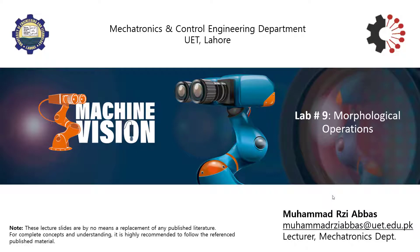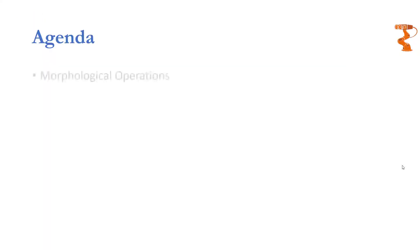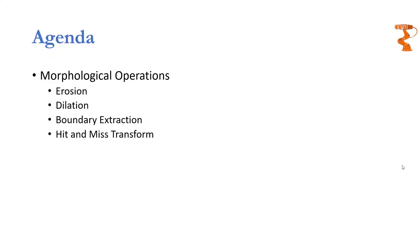In this lecture, I'll explain how to implement basic morphological operations in MATLAB. The agenda of this lecture includes implementation of erosion, dilation, and extraction of the boundary of a simple binary image using simple morphological operations. Furthermore, hit and miss transform will also be implemented on a simple binary image.